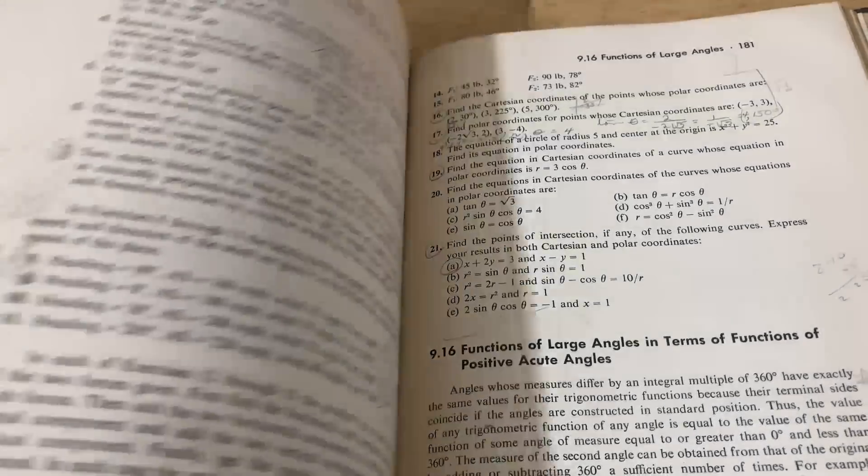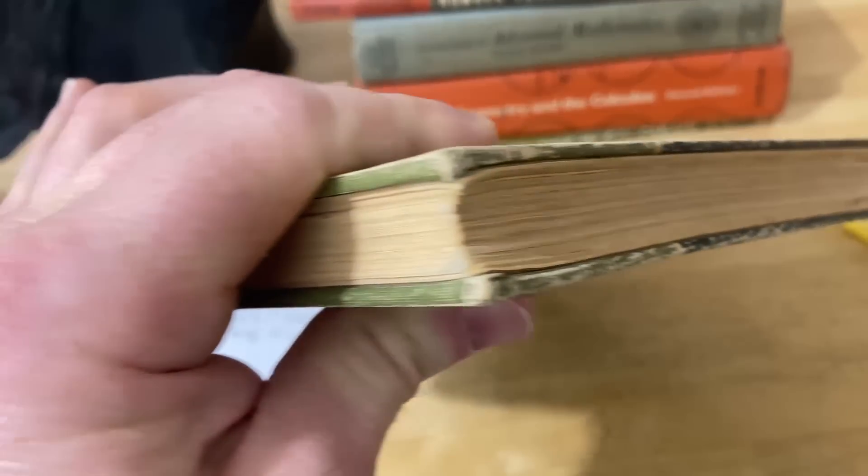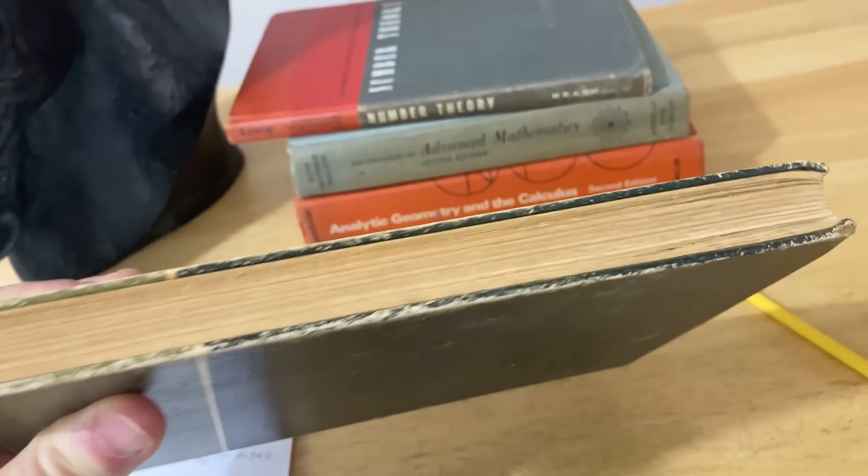So whoever owned this book before me, and actually there's a name in the book, but I'm not going to mention the name because they might still be alive, must have used this book a lot. The book is filled with writing. Almost the entire book has writing in it, even the later chapters. So you can tell that someone spent a great deal of time learning math. I can smell the book as I flip through the pages. Just what a well-worn warrior of a book.